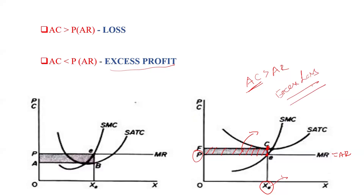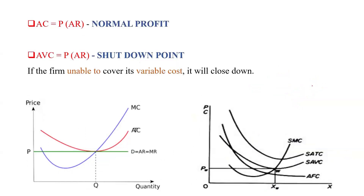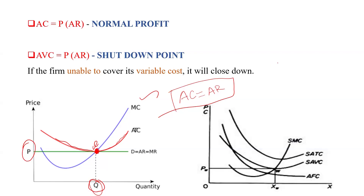This is the profit and loss situation. If AR is greater than AC, the firm earns excess profit. If AR equals AC, the firm earns normal profit. If AR is less than AC, the firm faces a loss. These conditions appear regularly in exam questions. For normal profit, when AC equals AR, the firm is at normal profit — meaning AR minus AC equals zero.